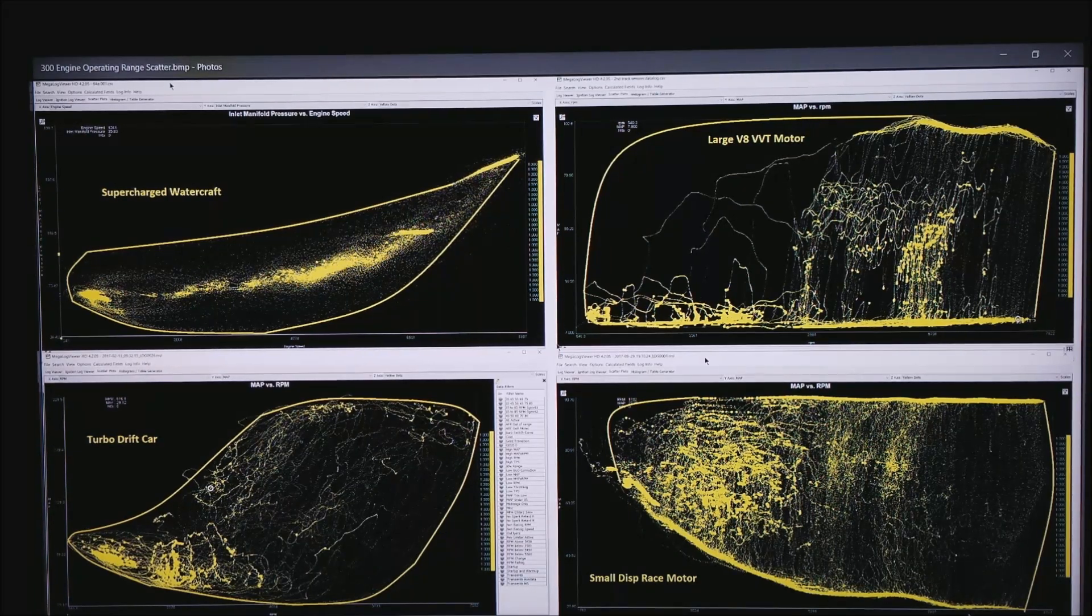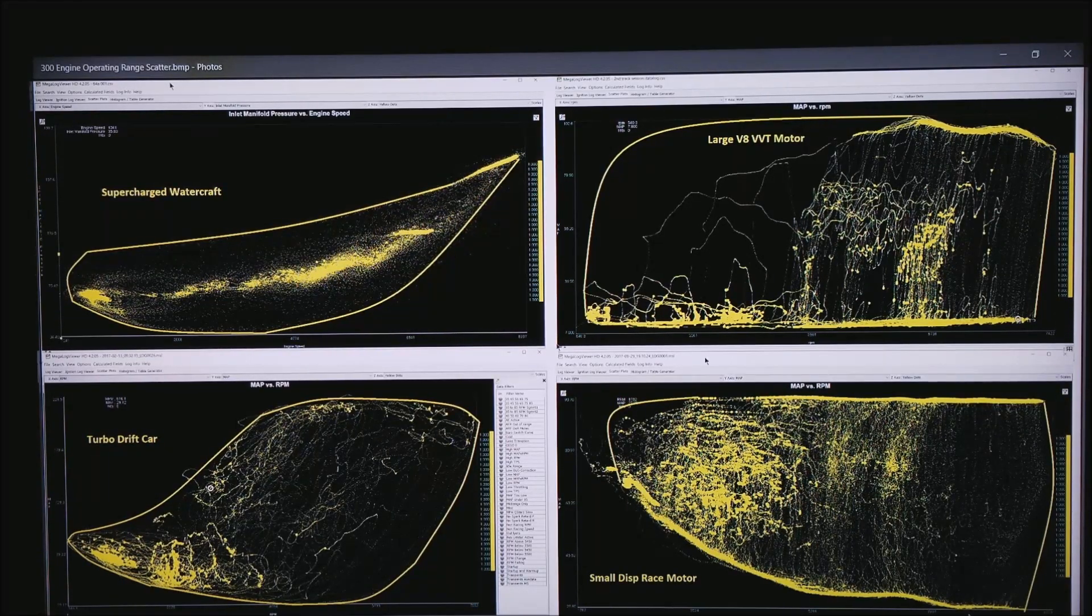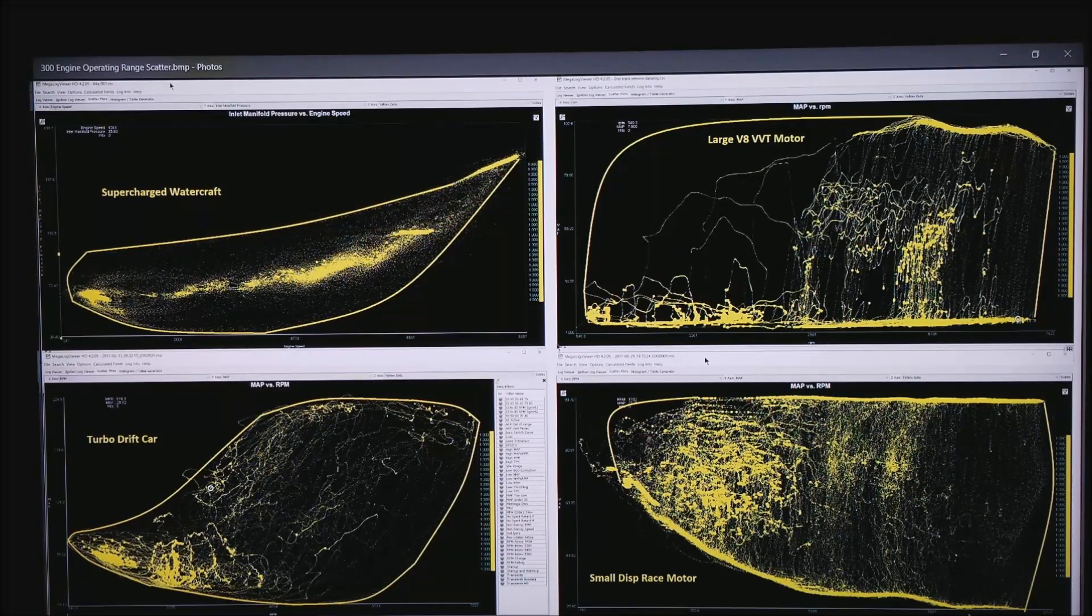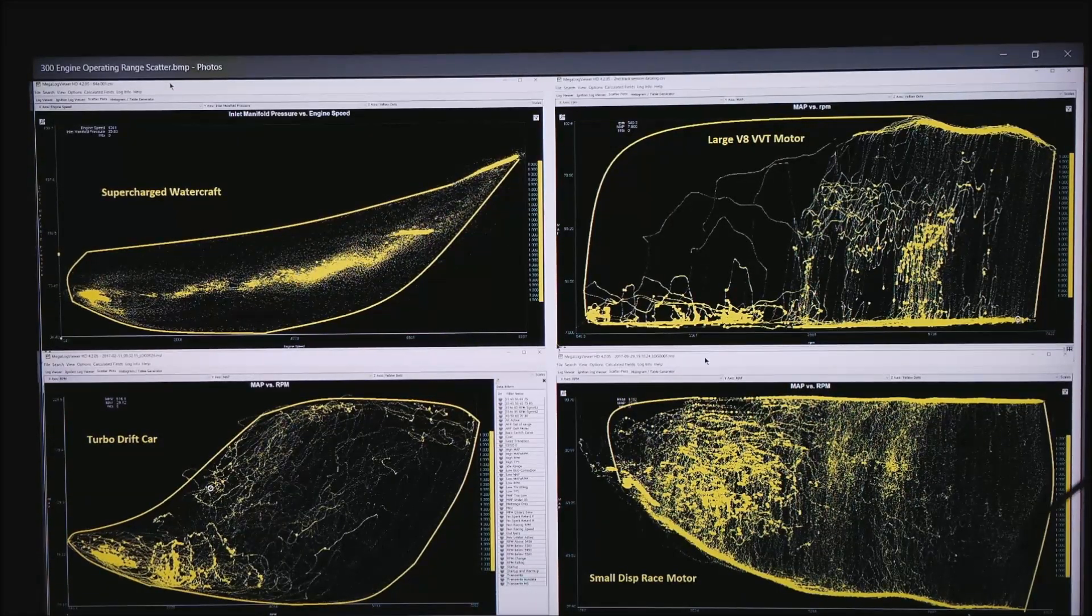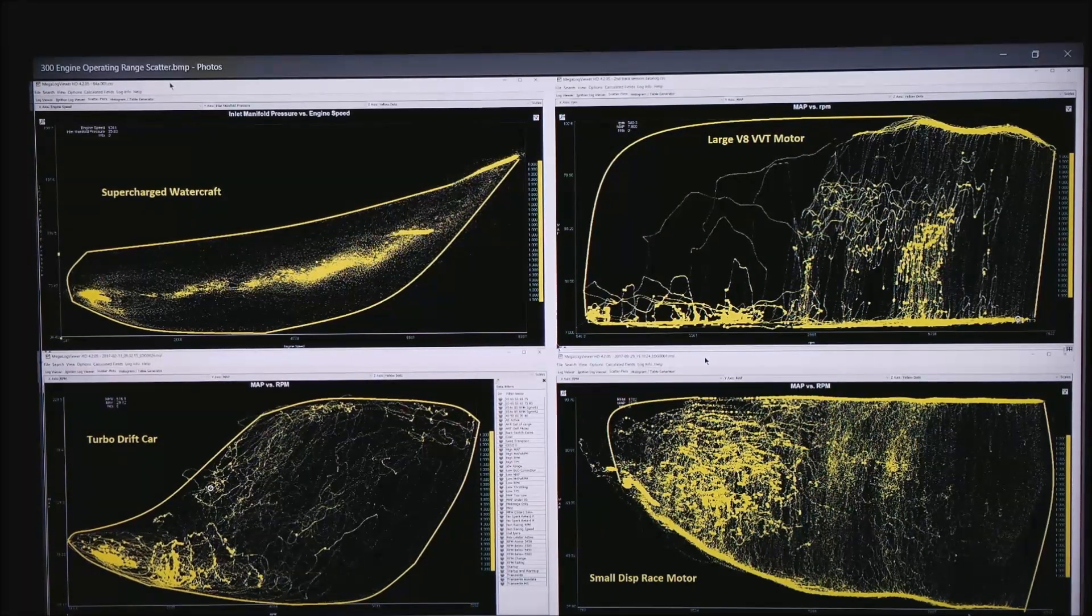The reason that you do want reasonable VEs down in these bottom right corners is every time you back out of the throttle and get back in you want to have reasonable amount of fuel in the intake manifold all your ports wetted down so when the guy gets back in the power the car transitions smoothly.